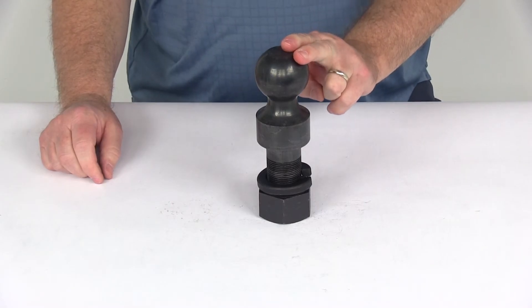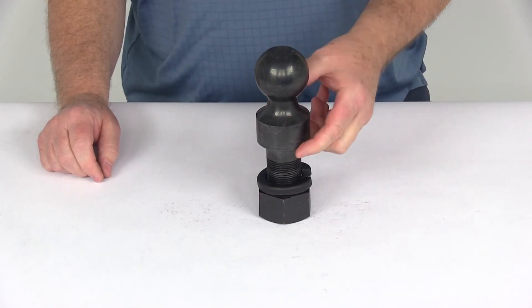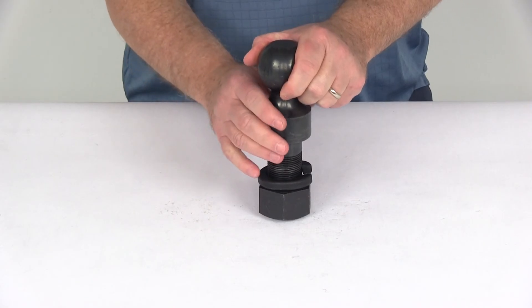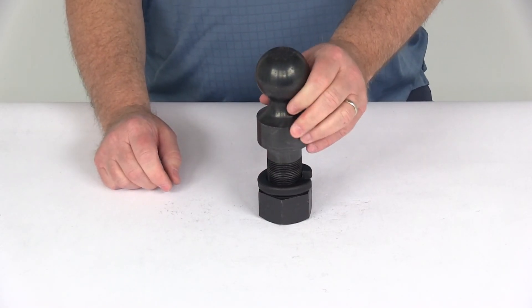That should do it for the review of the B&W 2-5-16 hitch ball with the 1-inch rise, long shank, raw finish, and 30,000 pound weight capacity.